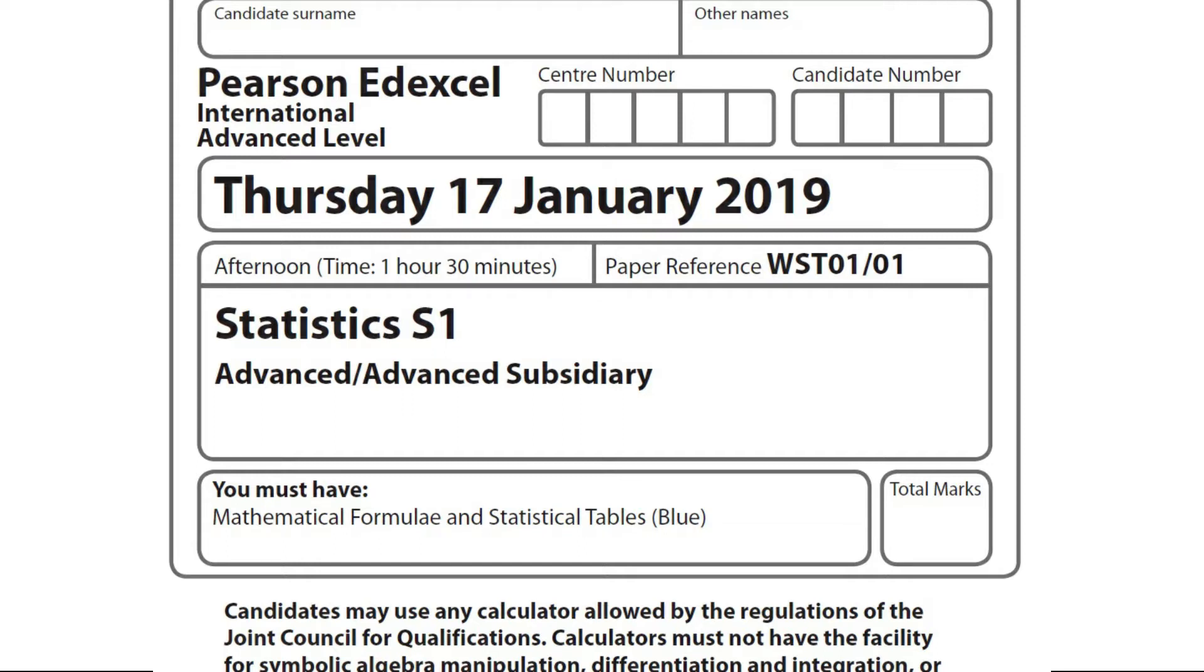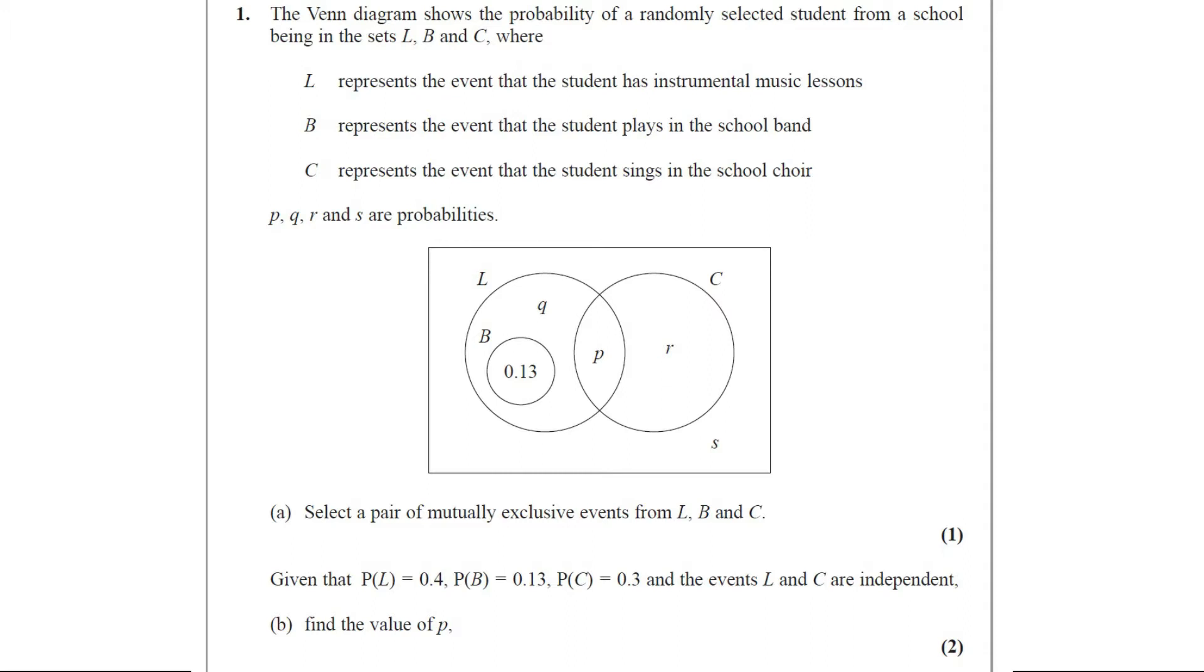This paper consists of 6 questions. Question number 1. The Venn diagram shows the probability of a randomly selected student from a school being in the sets L, B and C.